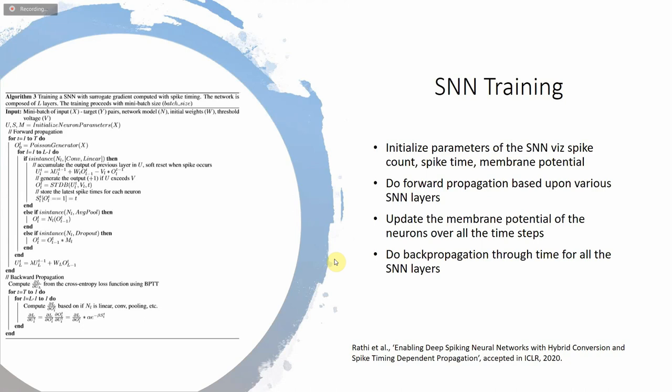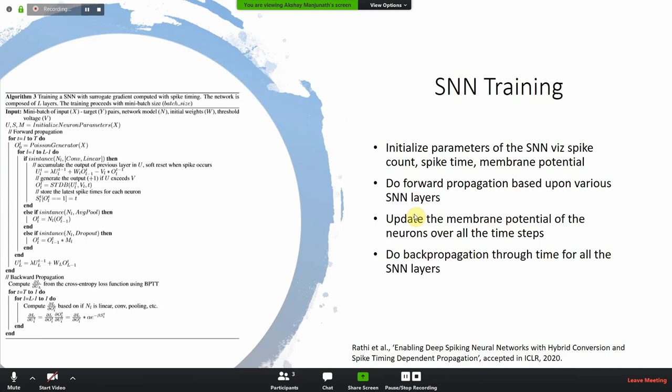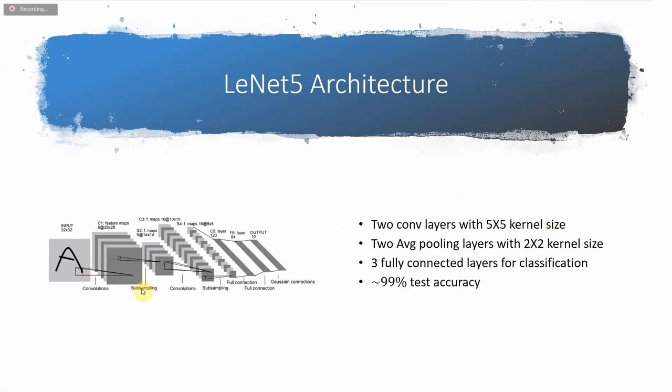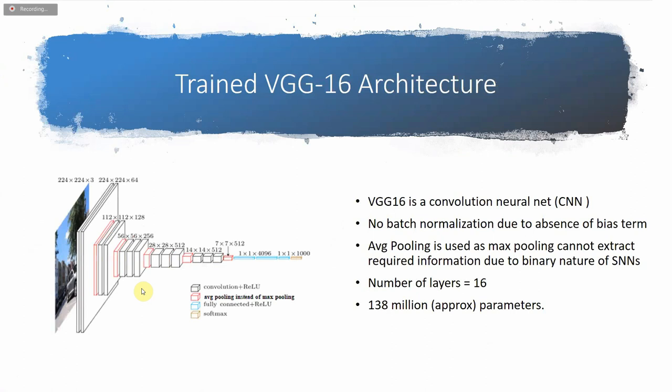The algorithm has two parts: forward propagation and backward propagation. In forward propagation, we take the input and using the equations described by Akshay, we calculate the output. In backpropagation, the same learning rule described earlier is applied. We used the LeNet-5 architecture and the VGG-16 architecture. Two important constraints were applied: no batch normalization was used, and instead of max pooling, average pooling was used.